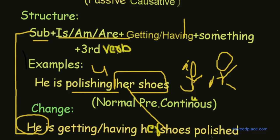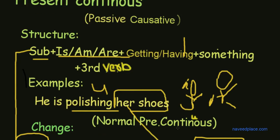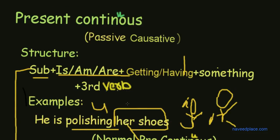So the verb third form is polished. So this is the way to make examples of present continuous passive causative. I hope you have understood.